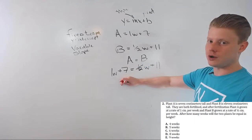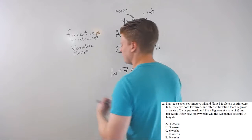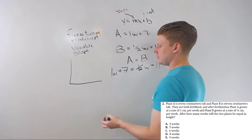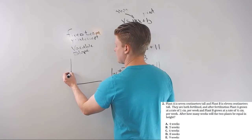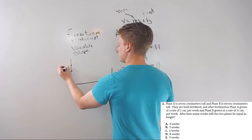Now before we solve, let's take a look at what's actually going on here. Let's say I have a little graph this, okay. And I'm just going to approximate. Let's say this is A because it started at seven and B started at eleven.